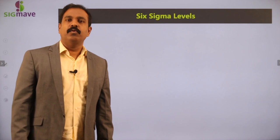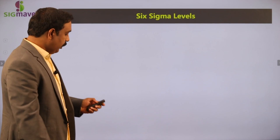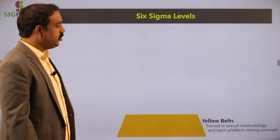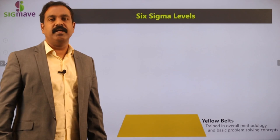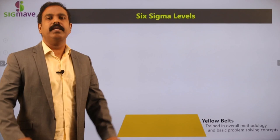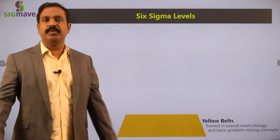In this lecture, we will talk about different levels of Six Sigma certification and their roles. First and foremost is yellow belts. Yellow belts are trained in overall methodology and basic problem solving concepts. This is the first level of Six Sigma — there are white belts also, but white belt is just an introduction of Six Sigma only. Yellow belts will know overall methodology and basic problem solving approach, but they are not expert in statistical problem solving.